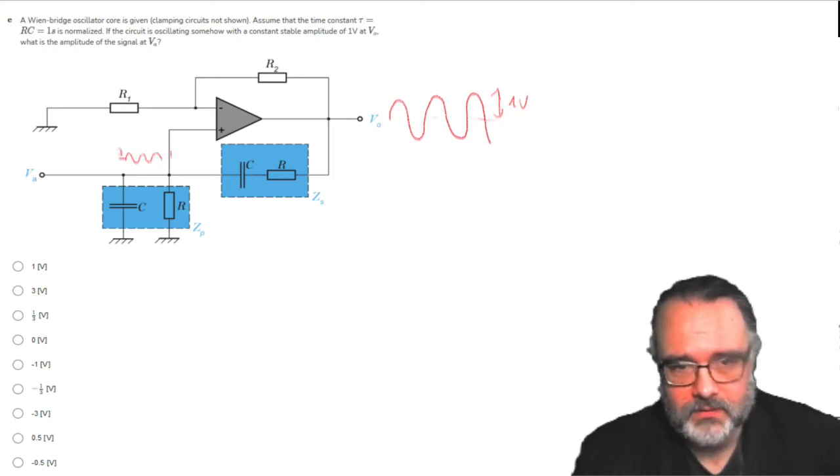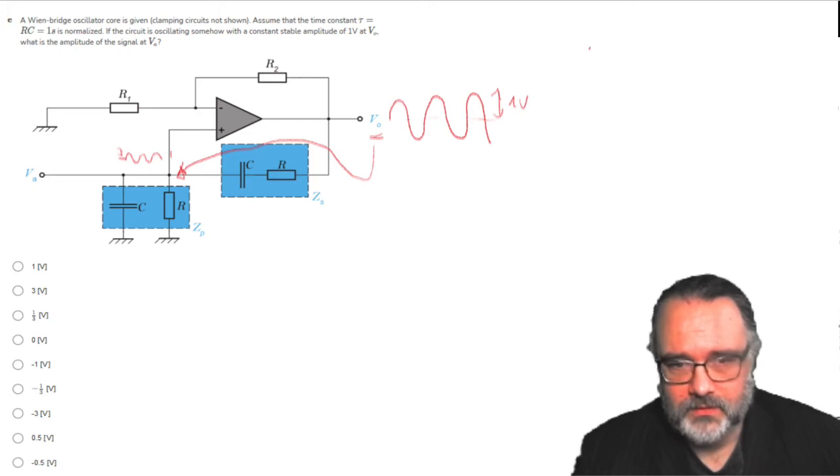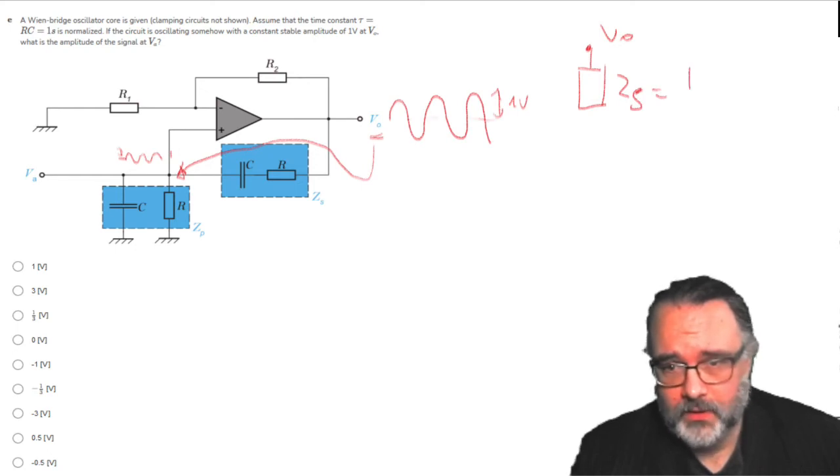In other words, what is the transfer from Vout to Va? If we look at the circuit, what we have is an impedance divider. So I can draw only this part Vout here, Vout. Then I'll have this Zs, which is basically 1 over Sc, this is the impedance of the capacitor plus R.